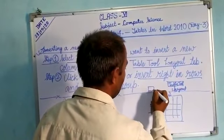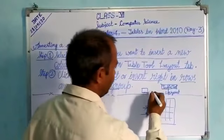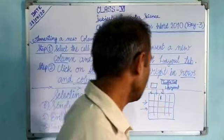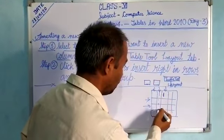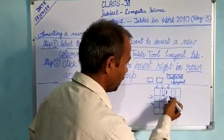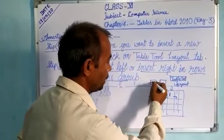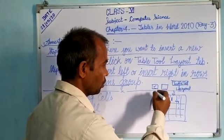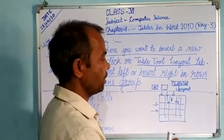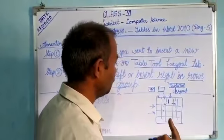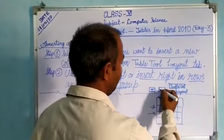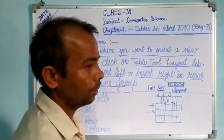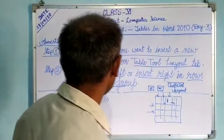In the Rows and Columns group, the options are Insert Left and Insert Right. According to your requirements, if you want to insert a column to the left side of the selected cells, click Insert Left. If you want to insert a column to the right side, click Insert Right. Then automatically a new blank column will be created, and after that you can fill in the data or information.